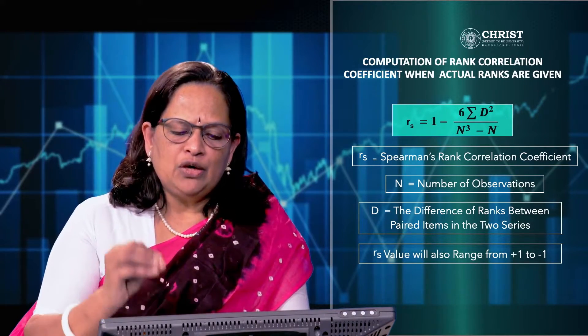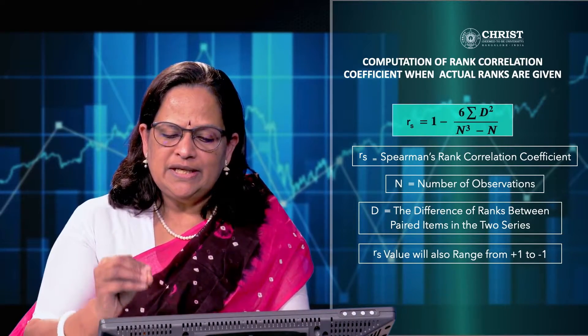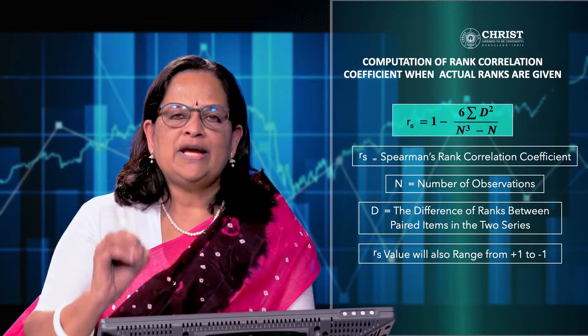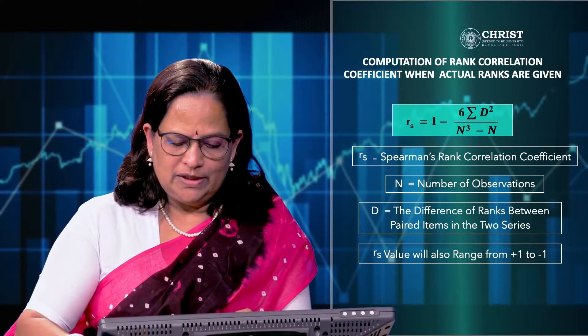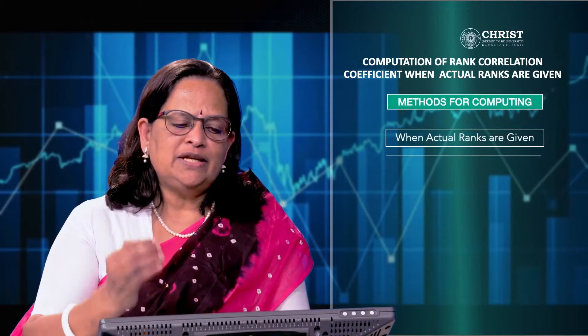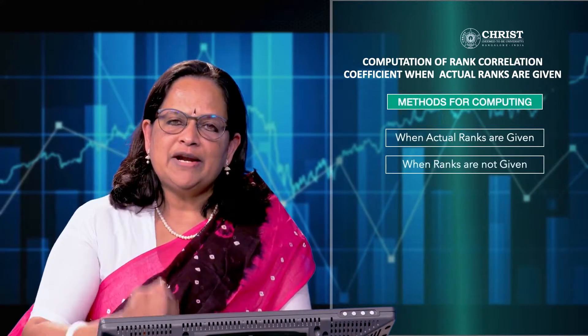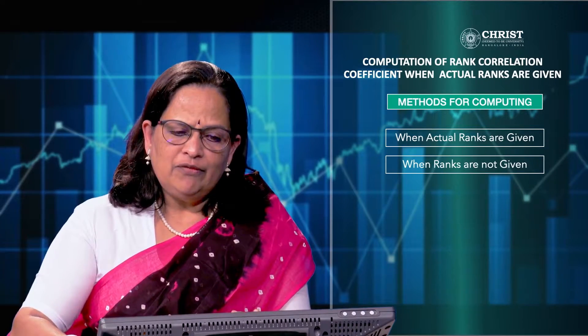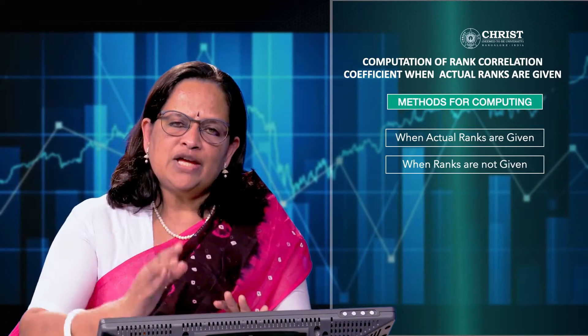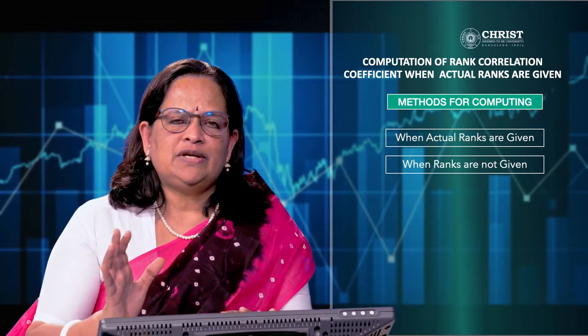A positive rank correlation indicates complete agreement in the order of ranks, or vice versa. As I already mentioned, there are two methods: when actual ranks are given and when ranks are not given. Here we are going to do two problems when actual ranks are given; the computation is very, very simple.